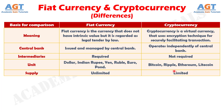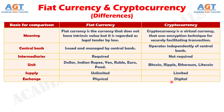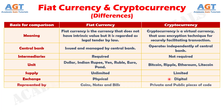Number 6: Fiat currency is a physical, that is conventional, medium of exchange, whereas cryptocurrency lets you perform exchange digitally. Number 7: Fiat currency is often represented by coins, paper notes and bills. On the other hand, public and private pieces of code represent a cryptocurrency.